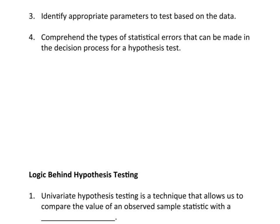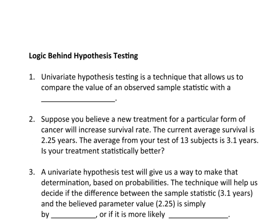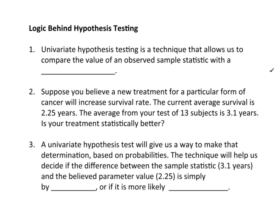Let's start off with a brief discussion of the logic behind hypothesis testing. We're going to start with univariate hypothesis testing — uni meaning one — where we will be dealing with only one variable. Univariate hypothesis testing is a technique that allows us to compare the value of an observed sample statistic with a believed population parameter.